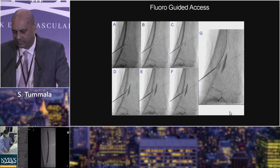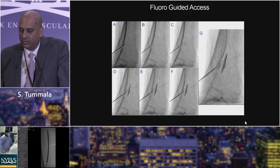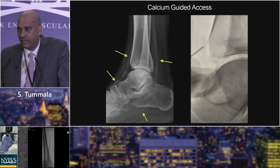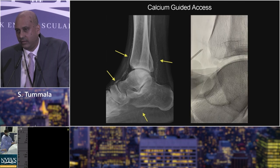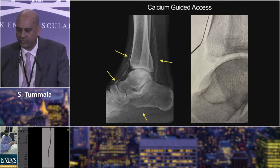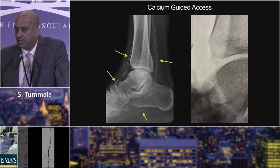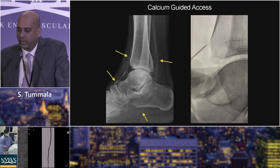When it comes to fluoro-guided access, there are two ways. The most common is using angiography to visualize the vessel — you use a micropuncture set, get access, advance your wire. However, in many CLI patients with diabetes and CKD, there is heavy intimal, medial, and adventitial arterial calcification. In this case, you can see we are accessing the distal anterior tibial artery near the ankle joint purely with calcium guidance and no angiography.